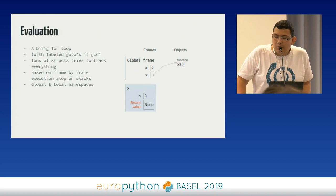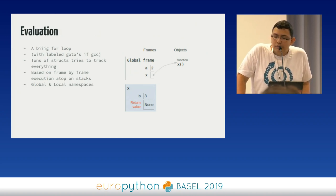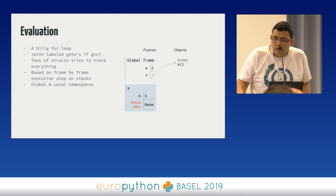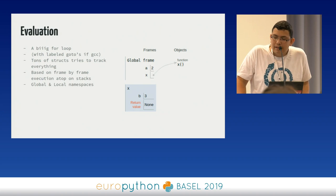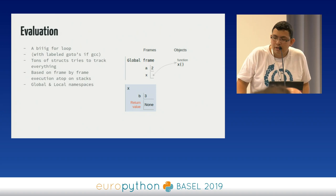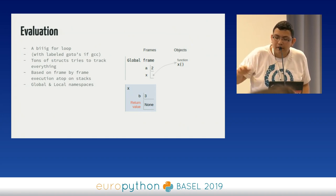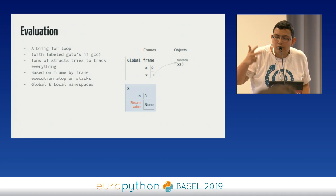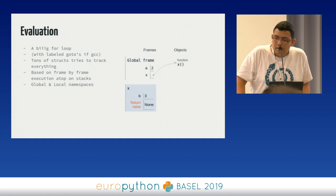The last step of the execution model is evaluation. Python goes through every instruction specified in the bytecode with a for loop, also with the help of a GCC feature called labeled GOTOs, and it will push and pop to a stack. When you say 2 plus 2, it pushes 2 to the stack, 2 to the stack, and then an instruction called BINARY_ADD pops the last two values, adds them, and pushes the result 4 back.